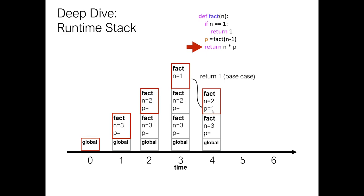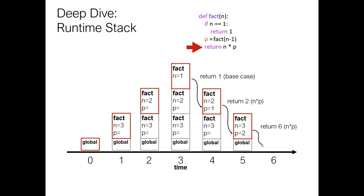We store 1 in p, compute 2 times 1, and return 2. As time progresses, we pop the active frame off the top of the stack, this one becomes active, and the return value goes into p — p is now 2. Now we have enough information that this function invocation can return — it's going to return 3 times 2, which is 6, returning that to the global frame. The global frame will do whatever it wanted — store it in a variable or print it out.